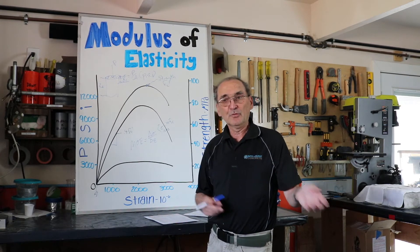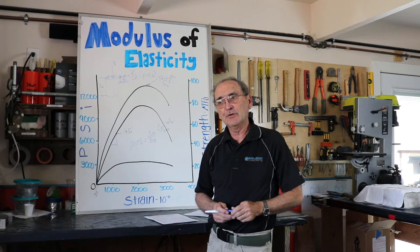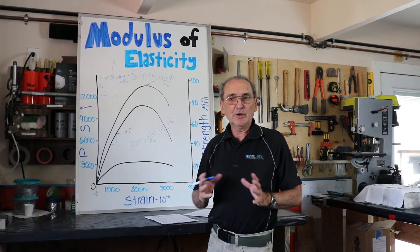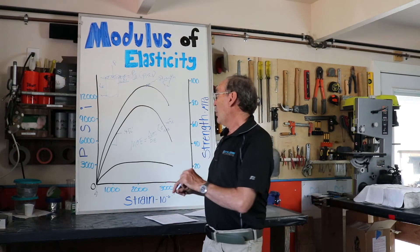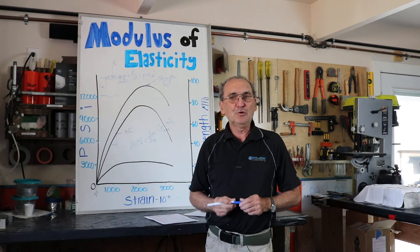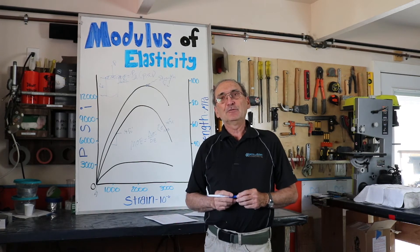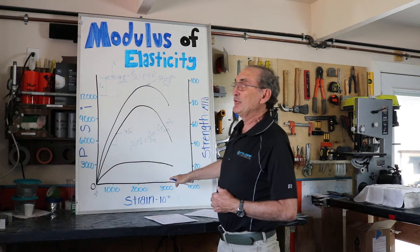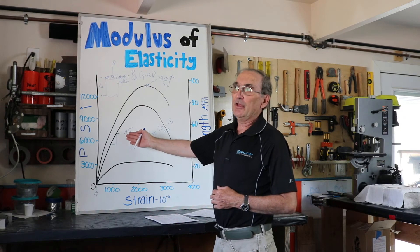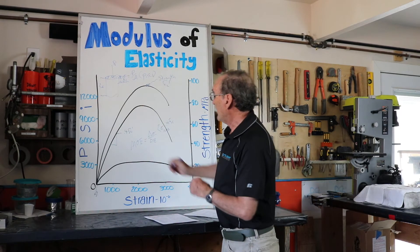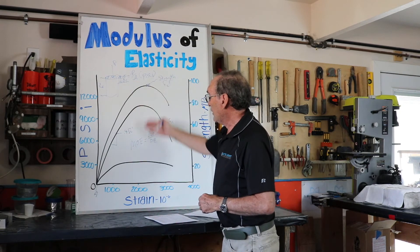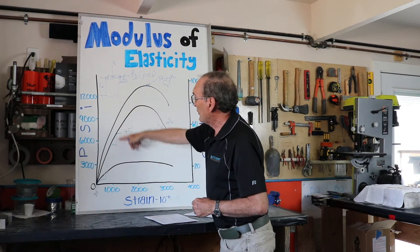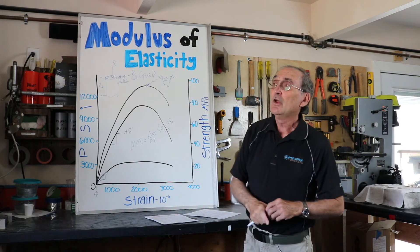Those estimates are based on so-called normal-strength concrete — they're empirical fits to data, so they give you an idea, a ballpark. But it's always better to calculate real properties from real data for use in real structures when doing design. Stress-strain is measured in the lab; modulus is calculated from that data. You can see that as strengths change, the modulus changes as well.